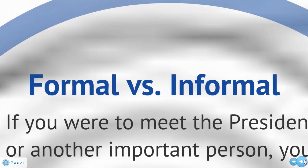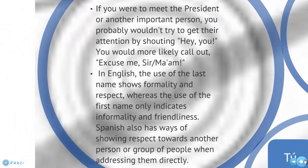In Spanish conversation, we have formal and informal ways to address people. For example, if you were to meet the president or another important person, you probably wouldn't shout 'hey you' — you would say 'excuse me sir' or 'excuse me ma'am.' In English, we use the last name to show formality — for example, Miss Baker or Miss Hampton as a sign of respect. Whereas the use of the first name only indicates informality and friendliness. You wouldn't call me Ginger; you would say Miss Baker because that shows respect.